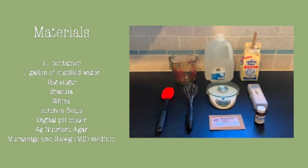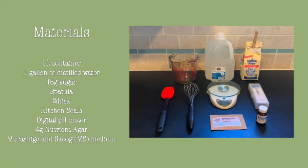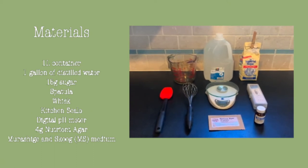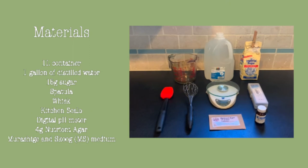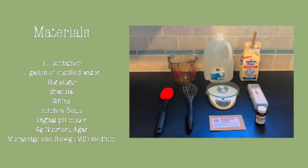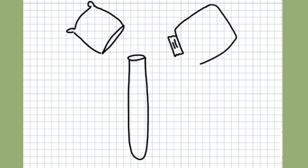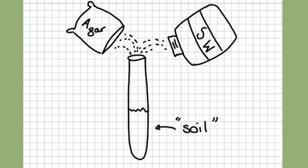For this experiment, you will need a 1-liter container with 100-milliliter incremented measurements, 1 gallon of distilled water, 15 grams of sugar, a spatula, a whisk, a kitchen scale, a digital pH meter, 4 grams of nutrient agar, and 3 grams of Murashige and Skoog medium. Murashige and Skoog medium contains the nutrients that the cauliflower will need to grow, and agar serves to thicken the mixture. Together, these two ingredients create what can be compared to the soil plants growing outside.